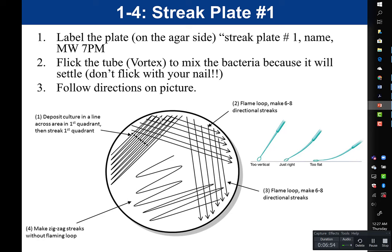To get less and less bacteria in each quadrant, we start by vortexing our liquid culture. Vortexing basically means mixing the bacteria. You push with your finger to make the tube vortex — we don't use a machine for day-to-day vortexing. We don't want to flick the tube with our nail, because there's a possibility of losing control of the tube and causing your broth to go everywhere.